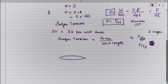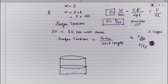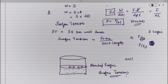Surface tension acts in the plane of a surface. Consider a liquid surface — the surface tension acts in this direction, stretching the membrane or liquid surface. That is why it is called a stretched surface, and the tension which stretches it is called surface tension. The unit of surface tension is Newton per metre.